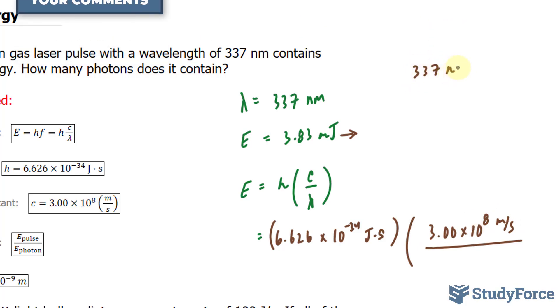We have 337 nanometers times, we know 1 nanometer is equal to 10 to the power of negative 9 meters. So we'll flip this, and this gives us a wavelength of 337 times 10 to the power of negative 9. Remember that this unit and this unit will cancel out, leaving us only with meters. I'll substitute this value now, 337 times 10 to the power of negative 9 meters.